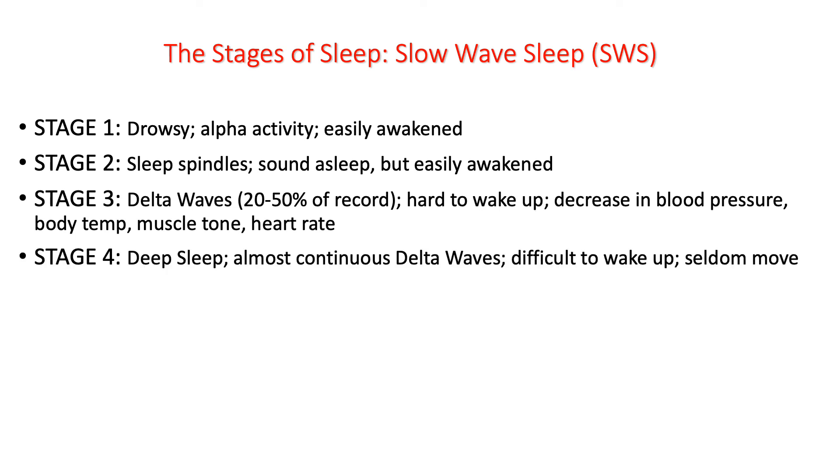So to summarize the stages of slow-wave sleep: stage 1, this is when you're first drifting off to sleep, you're drowsy, the brain activity is almost all alpha waves, it's really easy to wake the person up, it only lasts a couple of minutes. Stage 2 sleep, the person is more soundly asleep, but you can still wake them up pretty easily, and you start to see sleep spindles in the sleep record. Stage 3 sleep, we start to see the appearance of delta waves, the very slow, high-amplitude waves. People are now much harder to wake up. All of their normal waking physiological symptoms like blood pressure, body temperature, start to go down. And in stage 4 sleep, also known as deep sleep, you have continuous delta wave activity, and the person's extremely hard to wake up, and they don't move around very much.